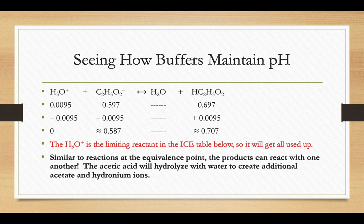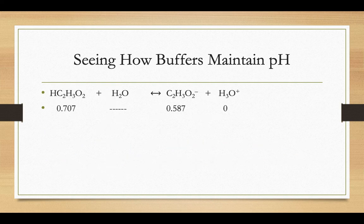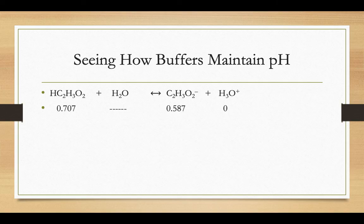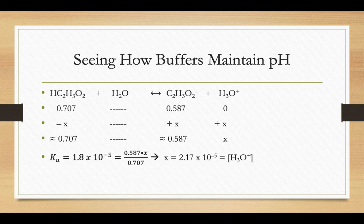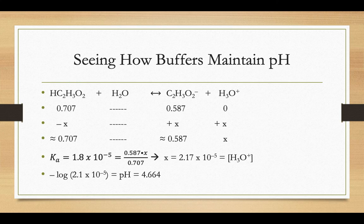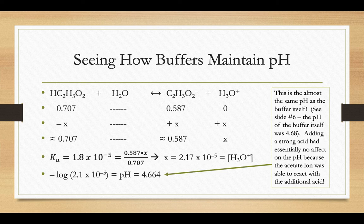So kind of like we did in the previous problems, we know the molarity of the acetic acid and the acetate ions from the previous slide. We know that the acetic acid is going to come down by some amount and the acetate and the hydronium are going to go up by some amount X. We know the Ka, it told us on a previous slide, the Ka value was 1.8 times 10 to the negative fifth. We can plug that in, solve our H3O plus, take the negative log of that number, and get our pH. That pH there is almost the same pH as the buffer itself. If you go back and look at when we found the pH of the buffer itself on slide number 6, just the buffer without any acid being added to it had a pH of 4.68, 4.664. It's essentially the same pH.